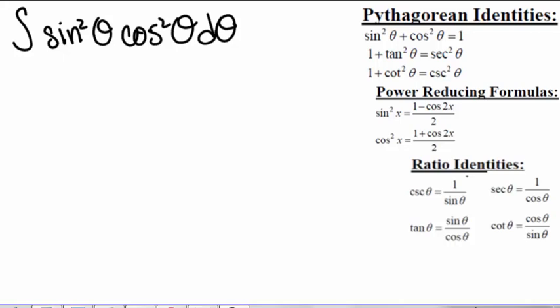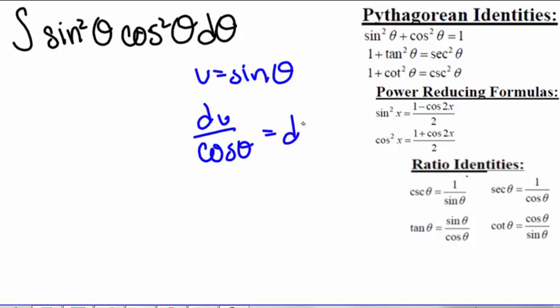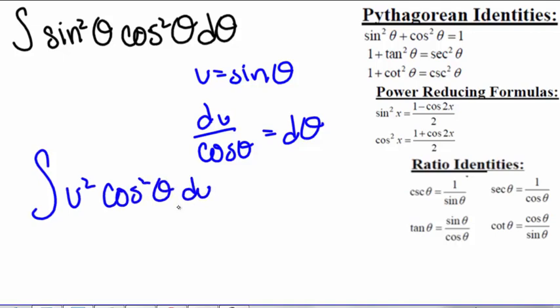Here we have the integral of sine squared of theta times cosine squared of theta dθ. We've already seen that when you have even powers, it's sometimes hard to use substitution. For example, if we used u equals sine of theta, then we'd have du over cosine theta equals dθ. So we'd have the integral of u² cosine² theta, du over cosine theta, and only one of these cosines would cancel out. Then we don't have any good identity or formula to substitute in.